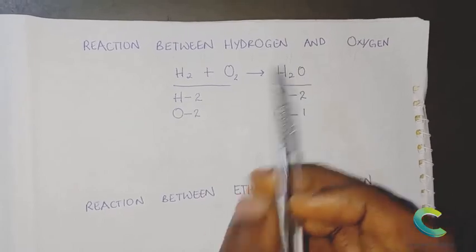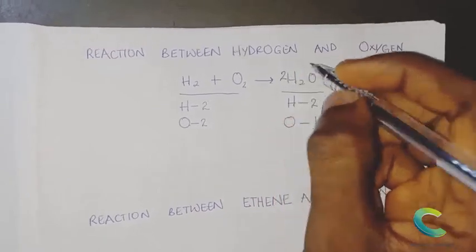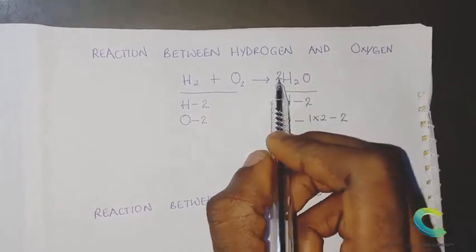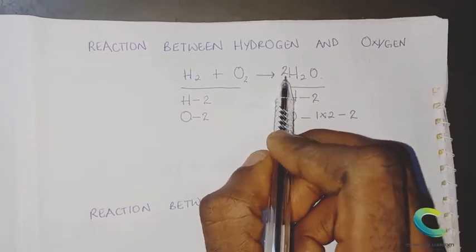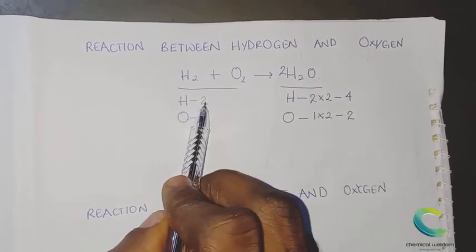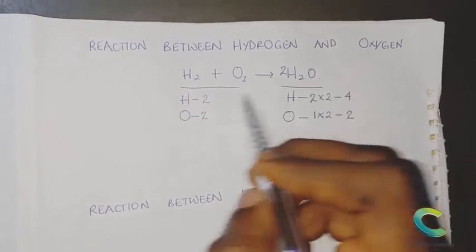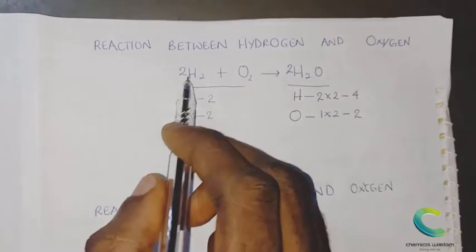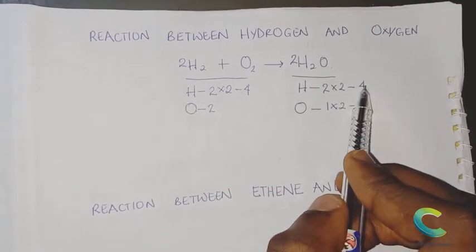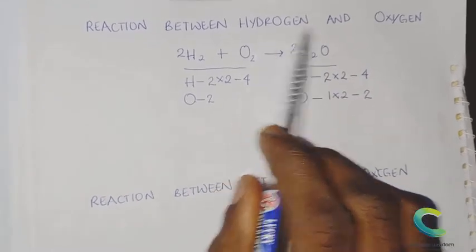The equation is not balanced. Step three says manipulate the coefficients. To convert one oxygen on the right to match two on the left, introduce a coefficient of two in front of water. This makes oxygen two times one, giving two — but it also makes hydrogen two times two, which is four. Now we have four hydrogen on the right and only two on the left, so introduce a coefficient of two in front of H₂, making it two times two — four. Now hydrogen is four on both sides and oxygen is two on both sides. The equation is balanced.